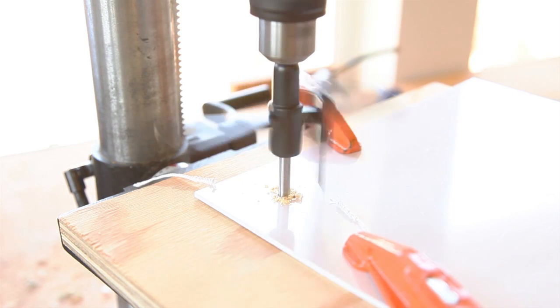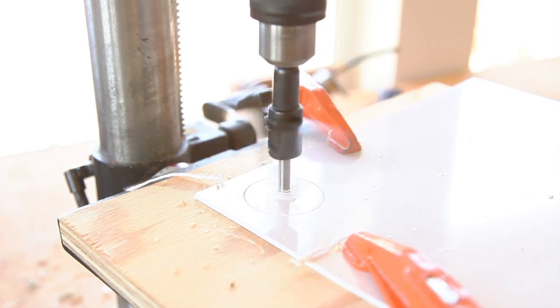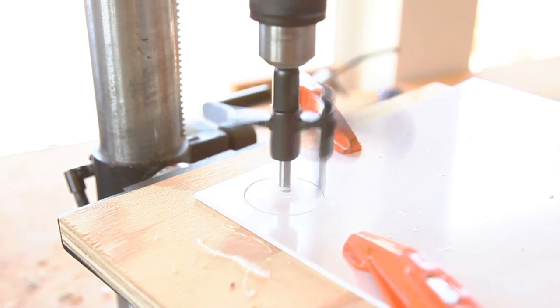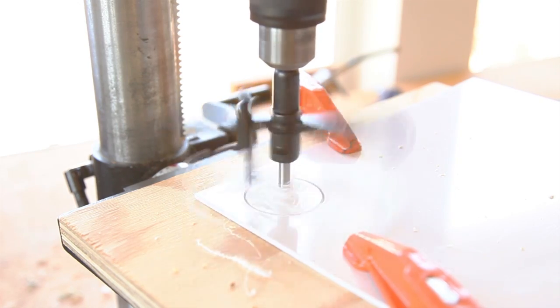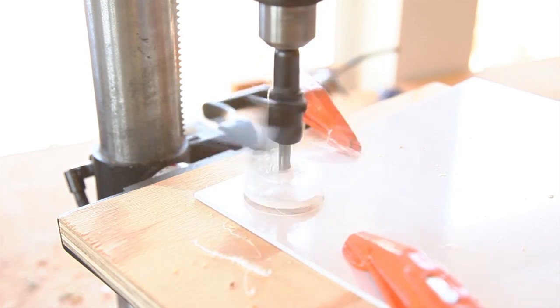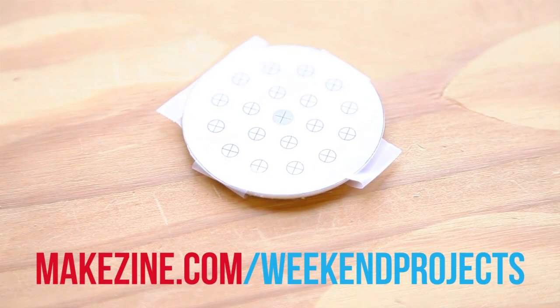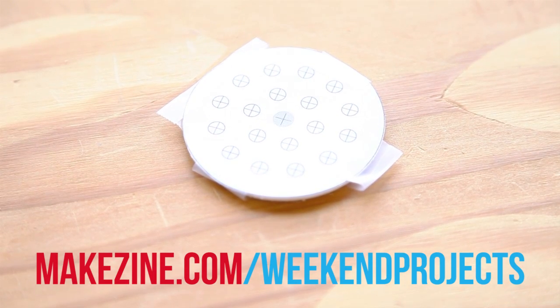First, we'll make the lamp head. If you have access to a drill press, the easiest way to cut out a circle of ABS plastic is with an adjustable circle cutter. Alternatively, you can use a handsaw and sand down the edges of the plastic to make a circle. Once you have your circle, you'll use the template to drill holes for the LEDs.